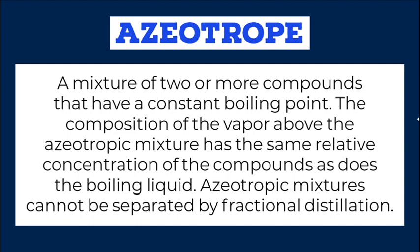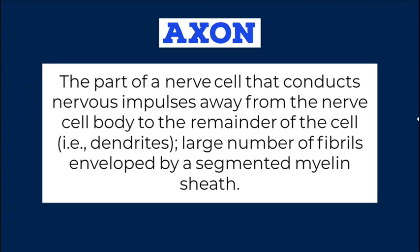Azeotropic mixtures cannot be separated by fractional distillation. Axon: The part of a nerve cell that conducts nervous impulses away from the nerve cell body to the remainder of the cell — that is, dendrites — consisting of a large number of fibrils enveloped by a segmented myelin sheath.